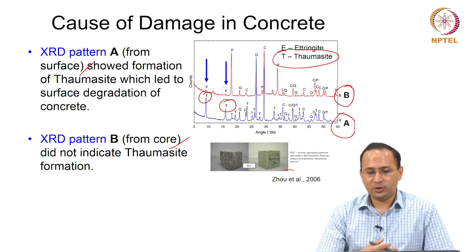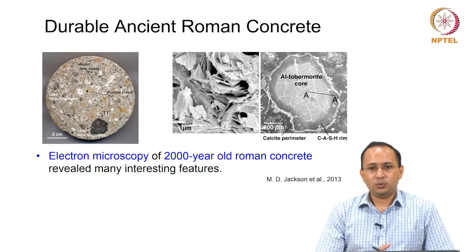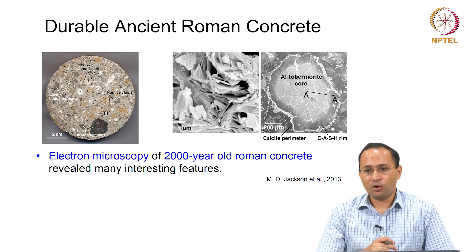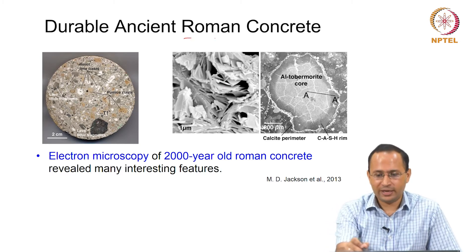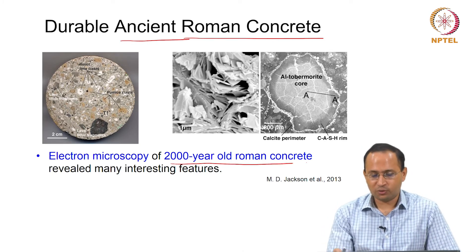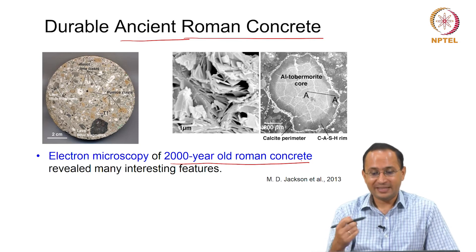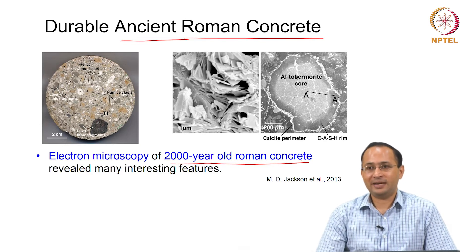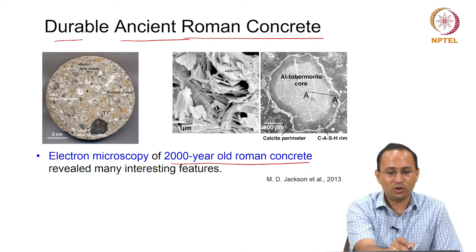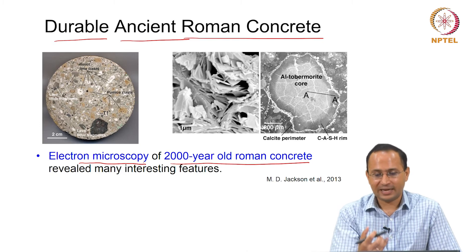XRD is a tool which can be used to identify crystalline phases in materials and in this case was used to identify the damage of concrete. Sometimes it is also important to understand why materials last long. This is an example of ancient Roman concrete, which was in good condition — a 2000-year-old Roman concrete buried in seawater. Researchers wanted to understand what is in this concrete that made it last so long. Electron microscopy is one of the tools that can give us insight about the microstructure.